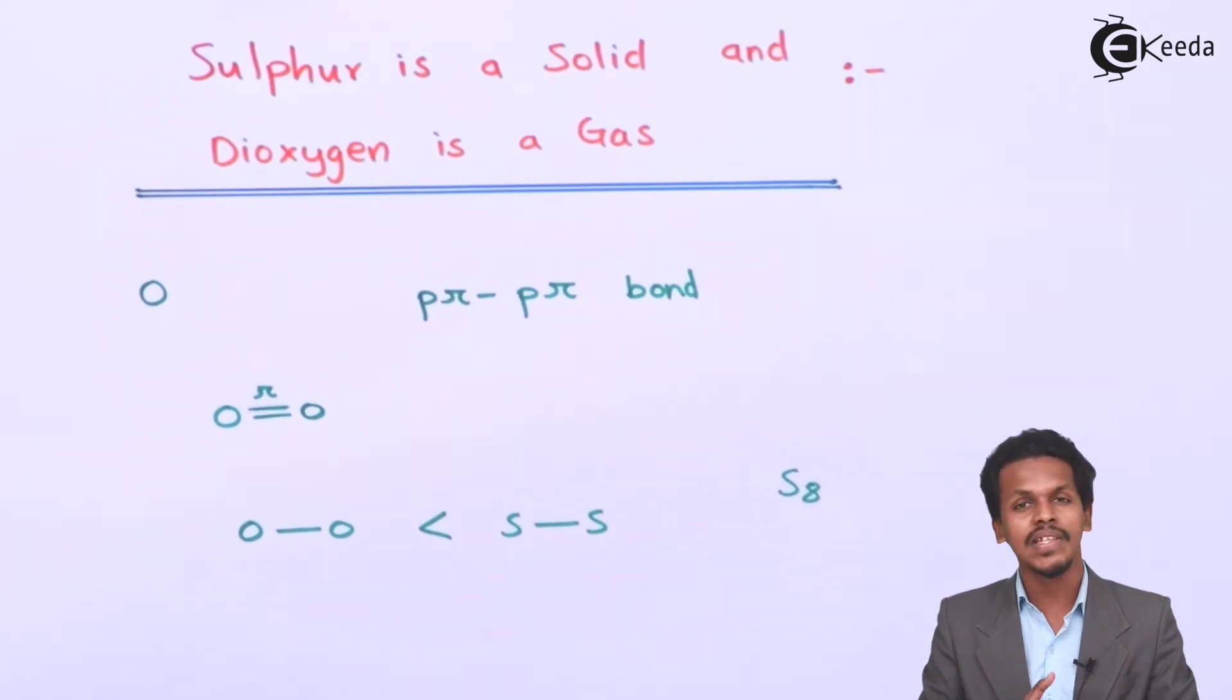Therefore these are the reasons I wanted to discuss, and we have come to the conclusion that dioxygen is a gas while sulfur is a solid.